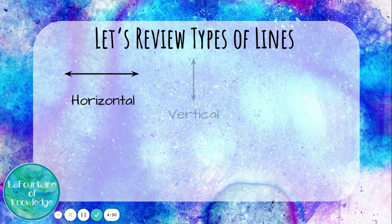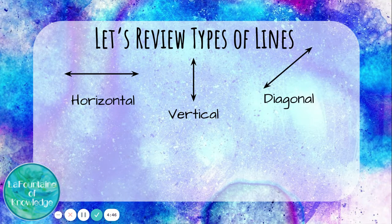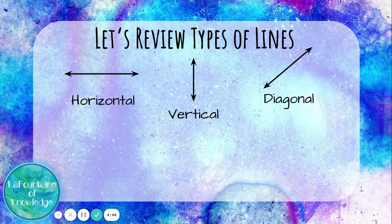Horizontal lines, vertical lines, and diagonal lines. These are ways to describe what direction a line is going.